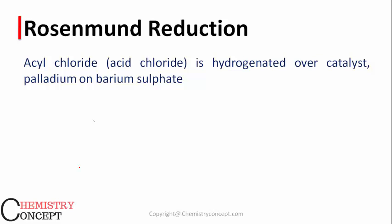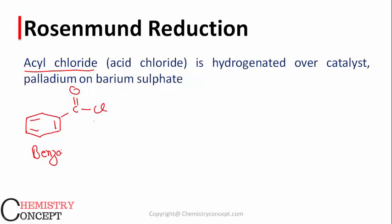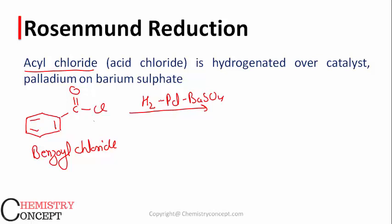First let's discuss Rosenmund Reduction. In this reaction, acyl chlorides (acid chlorides) are hydrogenated or reduced with the help of a catalyst like palladium on barium sulfate to form aldehydes. For example, benzoyl chloride is hydrogenated using hydrogen and palladium poisoned with BaSO4.